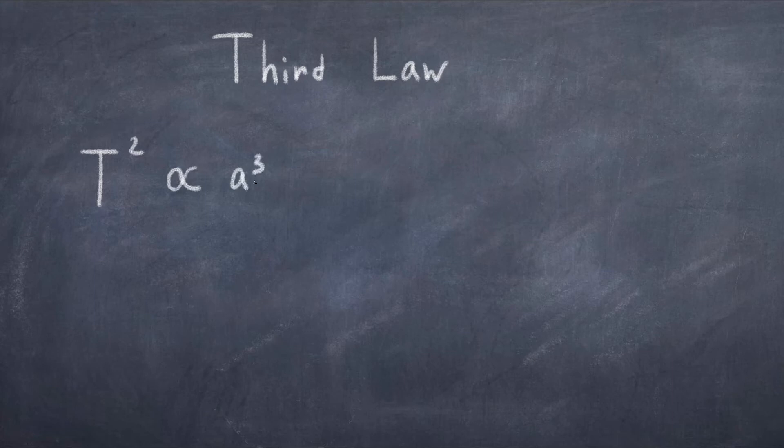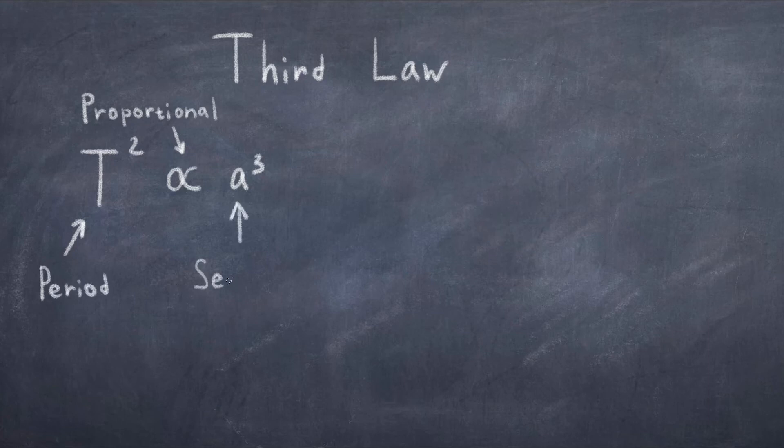The third law states, the square of the orbital period of a planet is directly proportional to the cube of the semi-major axis of the orbit. This law relates the orbital period of planets to the distance to the sun. Generally it makes more sense if you write it as an equation. So let's denote the orbital period as T and the semi-major axis as a and write it as T squared is proportional to a cubed.